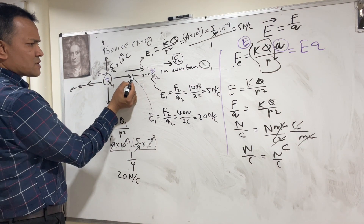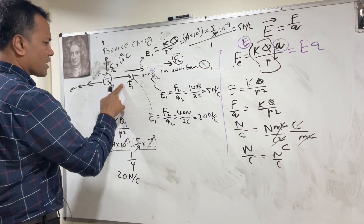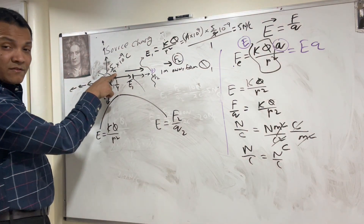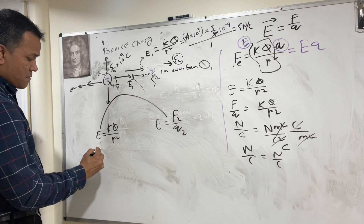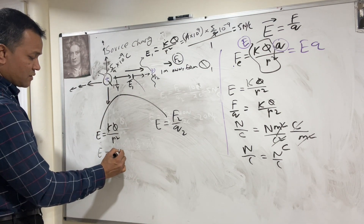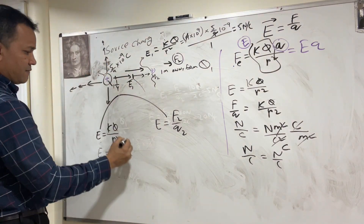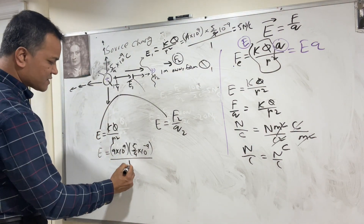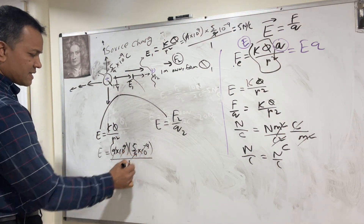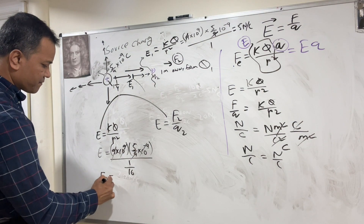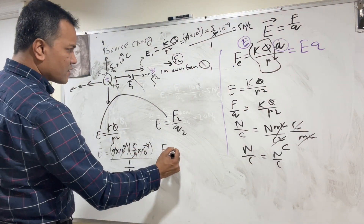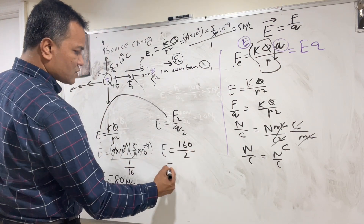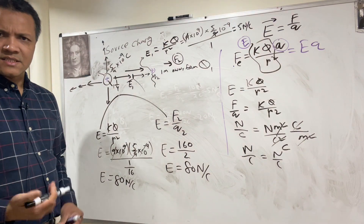Now let's go to 1/4 of the distance, so r = 1/4 m. Then r² = 1/16, so you multiply by 16. E = kQ/r²: 9 × 10⁹ times 5/9 × 10⁻⁹, divided by (1/4)², the 9s cancel and 5 × 16 = 80 N/C. Verifying: force becomes 10 × 16 = 160 N, divided by Q2 = 2 C gives 80 N/C. Both methods give 80 N/C.